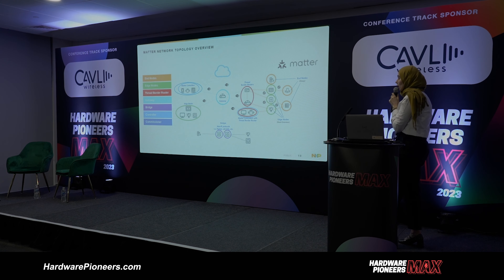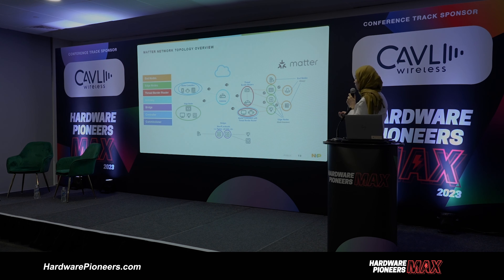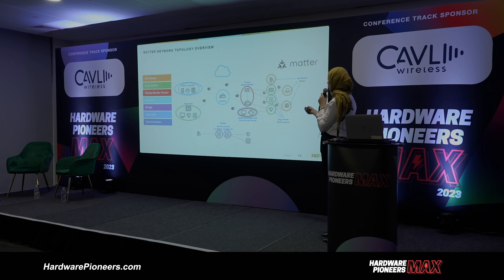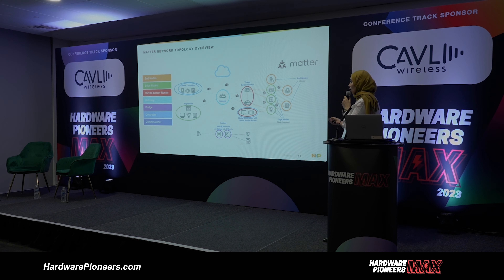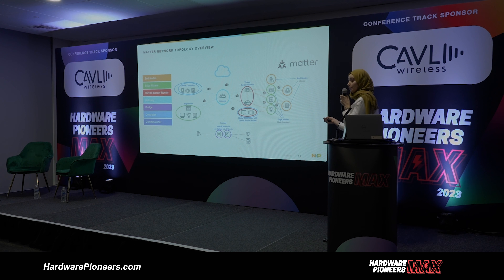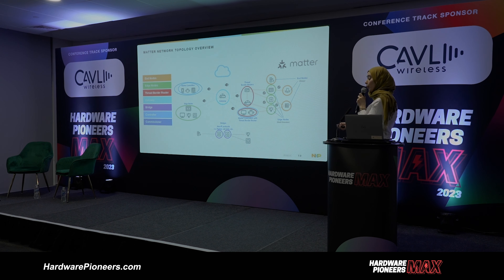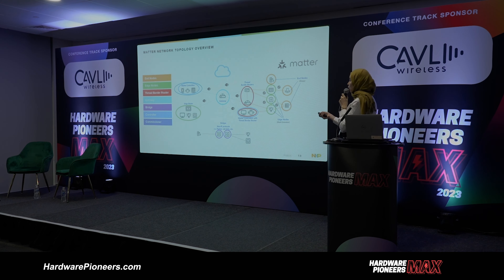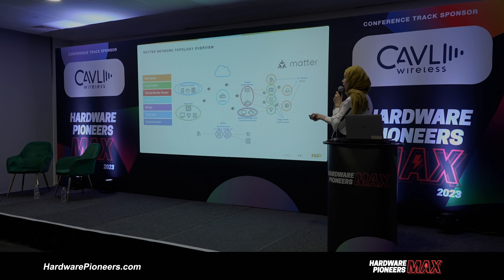Here's an example of a Matter network topology. You have end nodes — usually Thread end nodes that can also be sleepy end nodes connected to the Thread network. Then you have edge nodes, which can be Matter over Thread or Matter over Wi-Fi. These products are usually plugged in, not battery operated. If they are Matter over Thread, they can also be used as mesh extenders for the Thread network for more reliability and greater range.